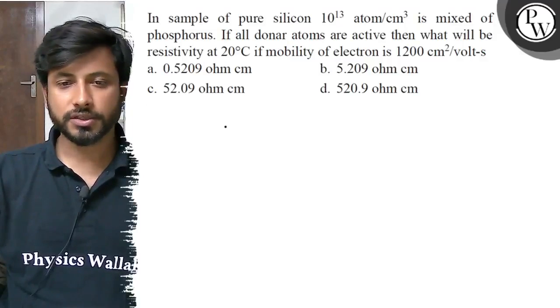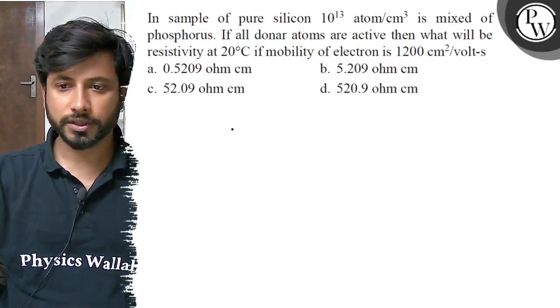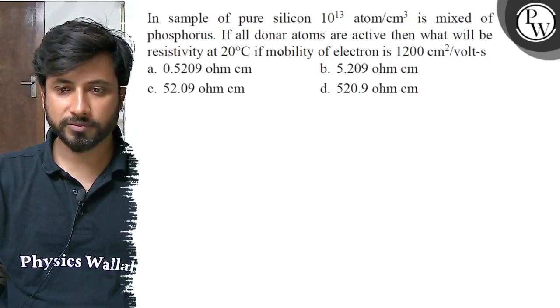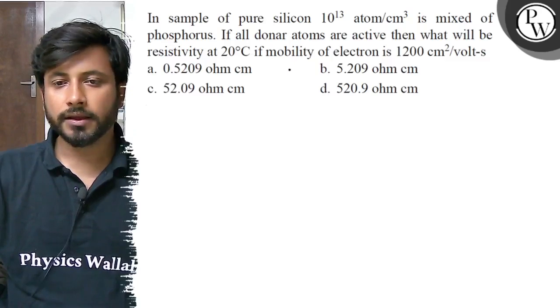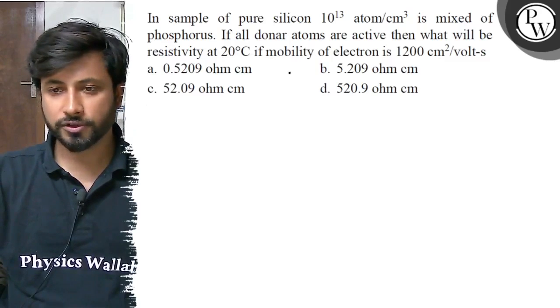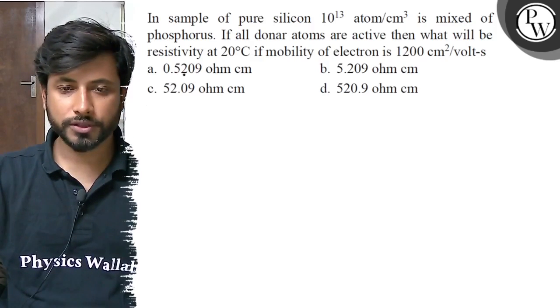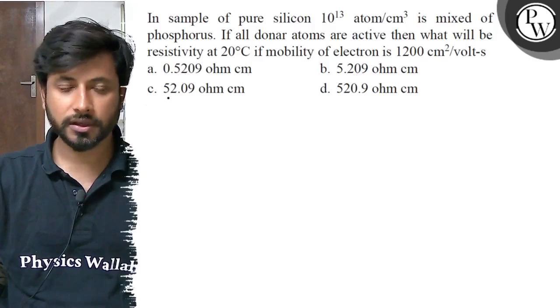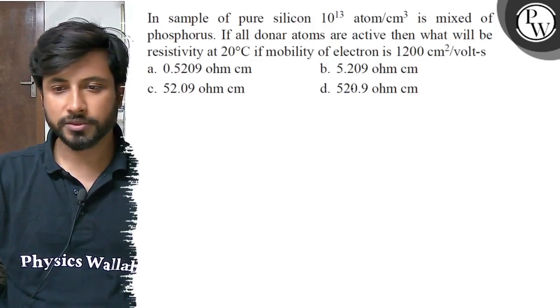Hello Bachchan, let us see this question. In a sample of pure silicon, 10^13 atoms per centimeter cube is mixed with phosphorus. If all donor atoms are active, then what will be the resistivity at 20 degrees Celsius if mobility of electrons is 1200 centimeter square per volt second? Options are: a) 0.5209 ohm centimeter, b) 5.209 ohm centimeter, c) 52.09 ohm centimeter, d) 520.9 ohm centimeter.